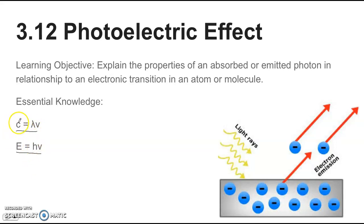This top one, c represents the speed of light, and that's a constant value given on your equation sheet. This symbol represents the wavelength in meters, and this symbol, the ν, represents frequency measured in hertz or waves per second.